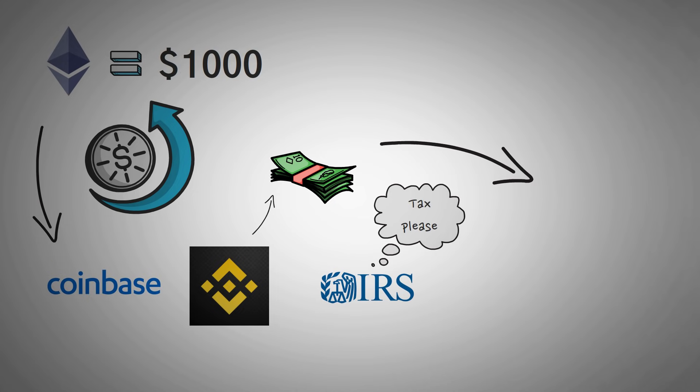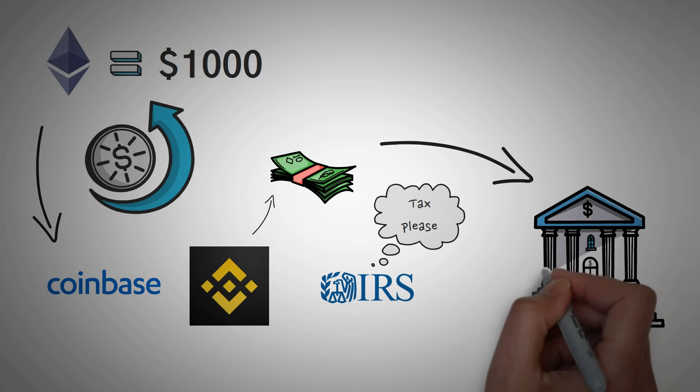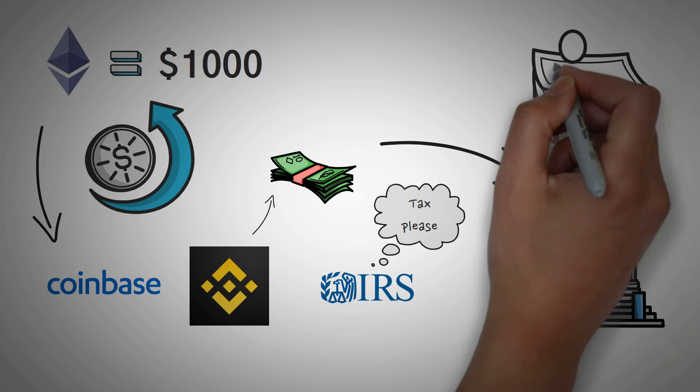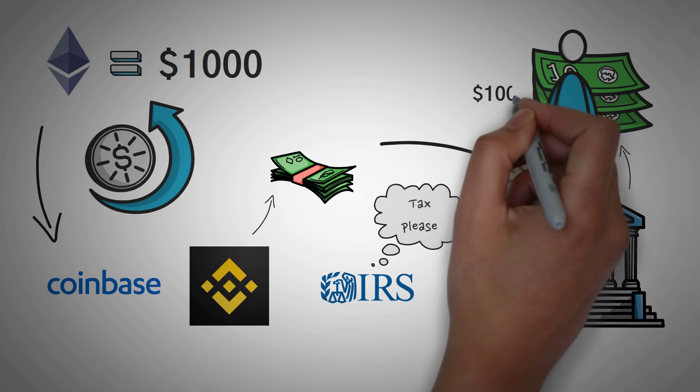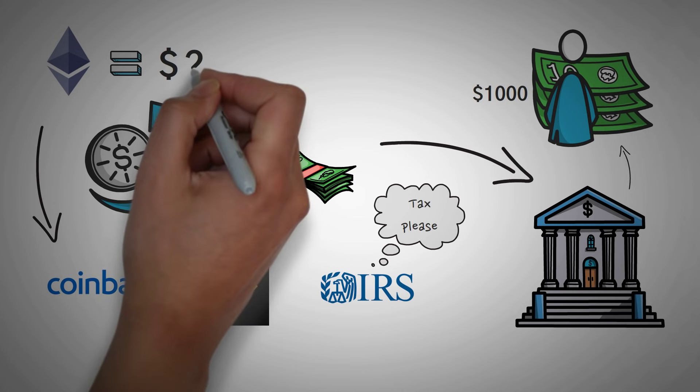The next step would be to wait for Coinbase or Binance to give them to your bank and then withdraw them from your bank because you don't really want the bank controlling your money. Well, a month later, Ethereum drops to $250 and you want to buy more. So you deposit your $1,000 back into Coinbase, wait a few days for the transaction to clear because you have to wait and then buy four Ethereum and hold them.